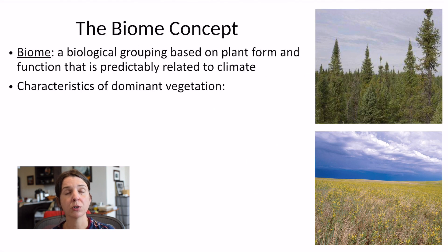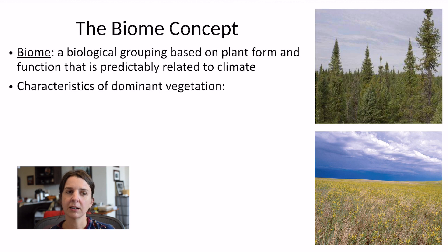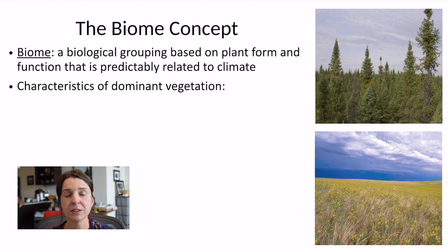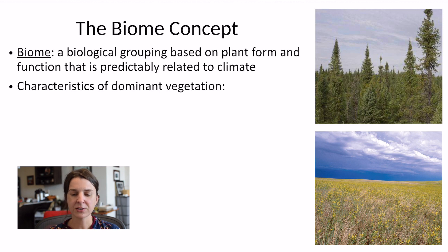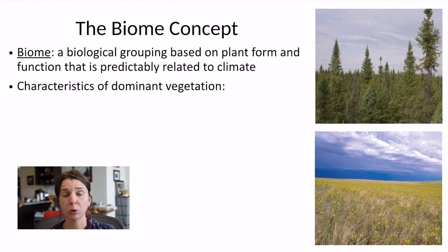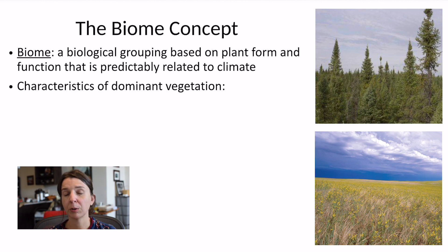Last time we talked about the causes of spatial and seasonal differences in climate across the planet. It turns out that those predictable and different patterns in climate lead to different and predictable patterns in the vegetation that live there. This coupling of the climate and the vegetation is known as the biome concept. The biome is the name we give for a biological grouping based on plant form and function that is predictably related to climate.